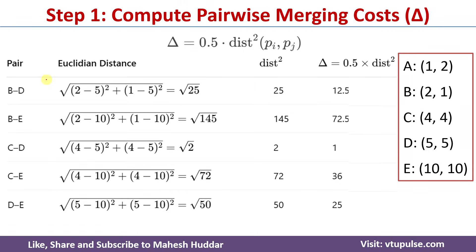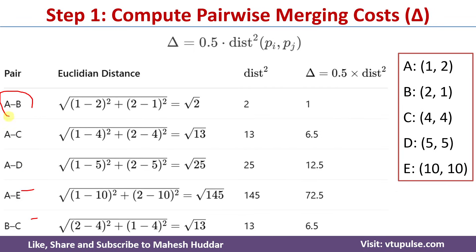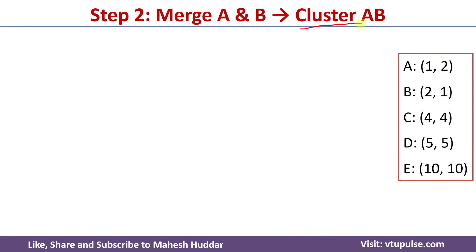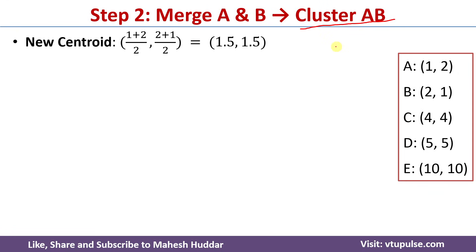Once we find the merging cost for all the pairs, next we need to find which pair has the minimum merging cost. We can see that the pair CD and pair AB both have the minimum cost of 1. Since two pairs have the same merging cost of 1, we select any one pair and merge it. So first I will select the AB pair and merge it to get the new cluster AB. The new centroid is (1+2)/2 and (2+1)/2, which equals (1.5, 1.5).